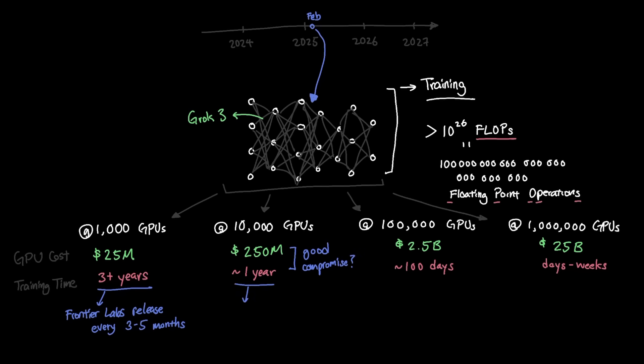Committing one model to train for an entire year is a huge risk since model architecture also innovates really fast, and you need to be agile in training the next model without waiting for the previous build to finish.